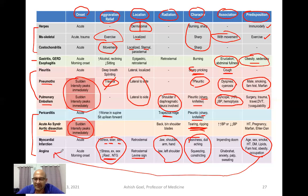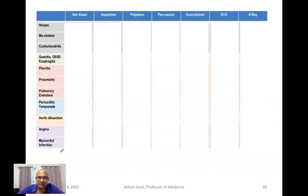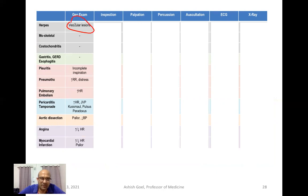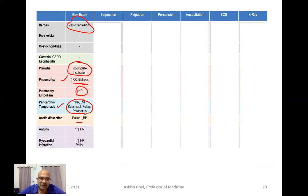On general examination: in a herpetic patient you will find vesicular lesions. In a pleuritic patient, there is incomplete inspiration, increased respiratory rate, and respiratory distress. In pneumothorax and pulmonary embolism, tachycardia is a feature. In pericarditis with associated tamponade, you might find a raised JVP, Kussmaul sign, and pulsus paradoxus. If the patient presents with pallor or hypotension, consider aortic dissection. Increased or decreased heart rate may indicate angina; a pallor or ashen face could indicate myocardial infarction.